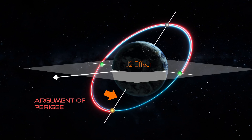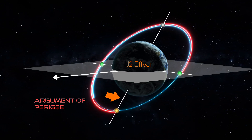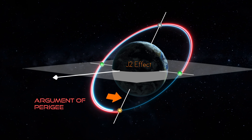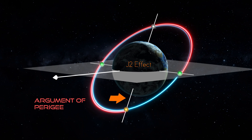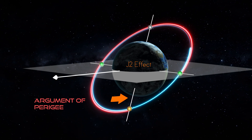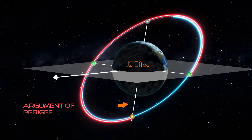J2 also affects the location of perigee. The shifting of perigee is a function of orbital altitude, inclination, and eccentricity. Just as with RAAN, the greater the orbital altitude, the less J2 affects the argument of perigee. Of those three classical orbital elements, inclination is the factor that has the greatest effect on the rate of perigee rotation.